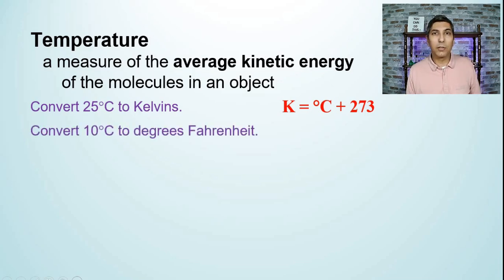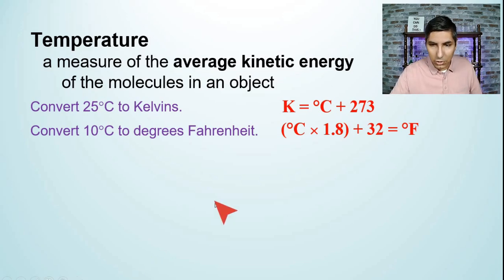Some of us are more familiar with the Fahrenheit temperature scale. Convert 10 degrees Celsius to degrees Fahrenheit. If you need to convert between Celsius and Fahrenheit, this is the equation: degrees Celsius times 1.8 plus 32 equals degrees Fahrenheit. So if we have 10 degrees Celsius, you can just plug that in and 10 times 1.8 is 18. 18 plus 32 equals 50. So 10 degrees Celsius equals 50 degrees Fahrenheit.